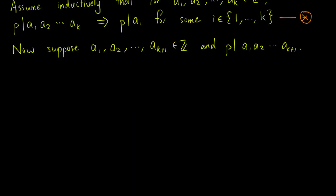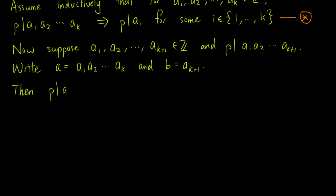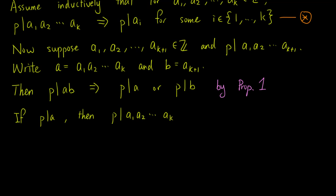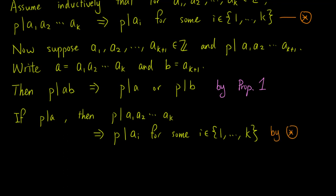Now suppose that a1, a2 up to ak+1 are integers, and p divides the product of a1, a2 up to ak+1. We can write a equals a1 times a2 up to ak, and b equals ak+1. Then using the first proposition, p divides a times b implies that p divides a or p divides b. If p divides a, then p divides a1 times a2 up to ak, which implies that p divides ai for some i in the set 1 to k, using (★).